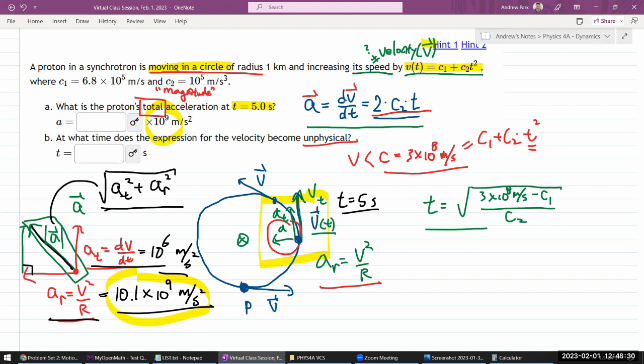And in working out the answer, I can tell you that given how much smaller C1 is compared, C1, this number, is compared to 3 times 10 to the 8 meters per second, I can approximate this as 3 times 10 to the 8 meters per second, simply divided by C2, and it'll be within. So, when the system grades these answers, it does by relative tolerance, usually 1% tolerance.